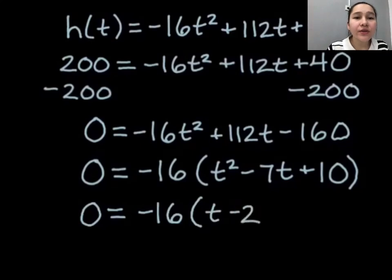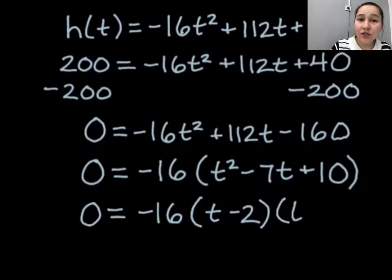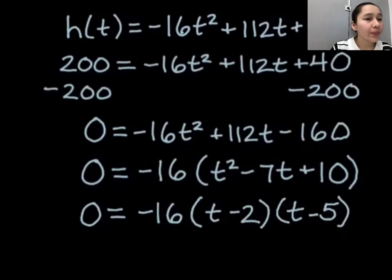So using the zero product rule, what we can say is each of these potentially could equal zero and that's the way that we would get the whole thing equal to zero. Well there is no point setting negative 16 to zero, it just doesn't work.